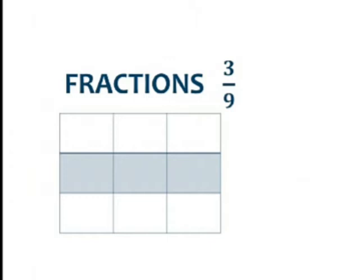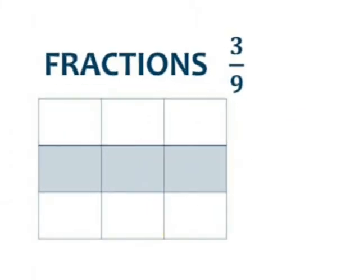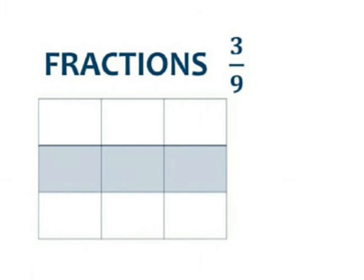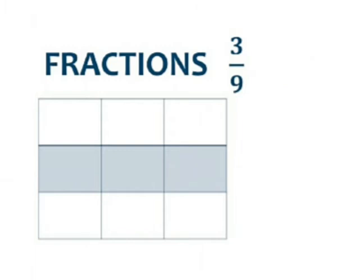It means your brother is having part of the whole orange. Let's look at this diagram — we have a box which has been subdivided into nine parts. Out of the nine parts, three parts are shaded, and that's why we write three over nine. In a fraction there are two numbers: the number on top is called the numerator, and the number below is called the denominator.